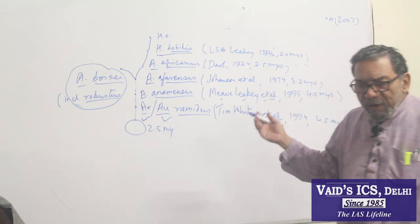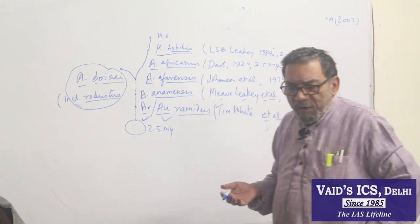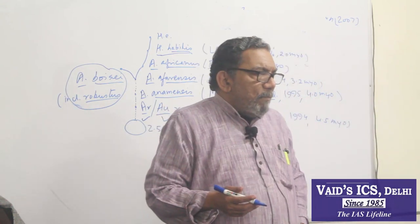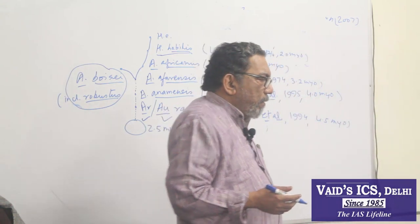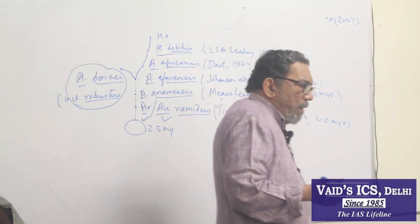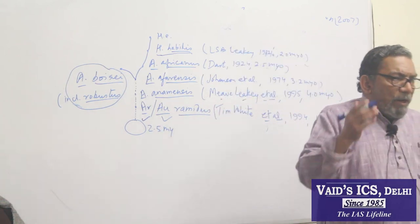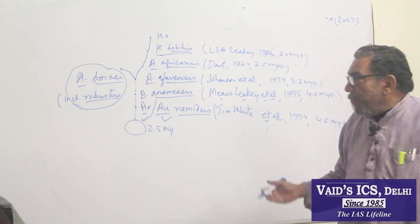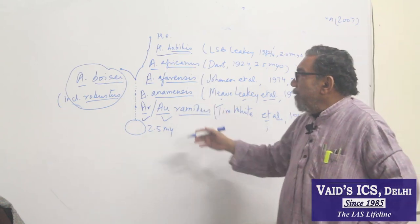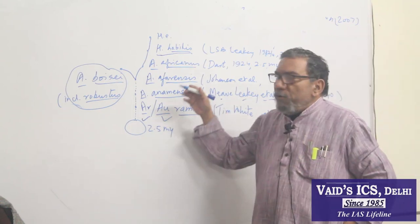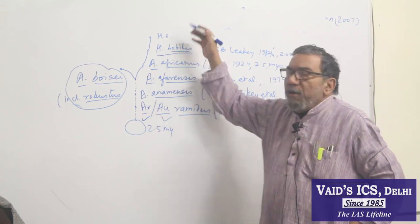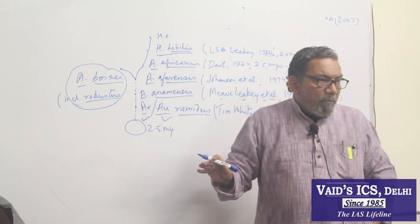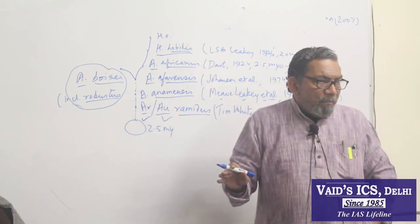Therefore, the evolution of man is traced from Ramidus to Anamensis to Afarensis to Africanus to Erectus, with or without Habilis.